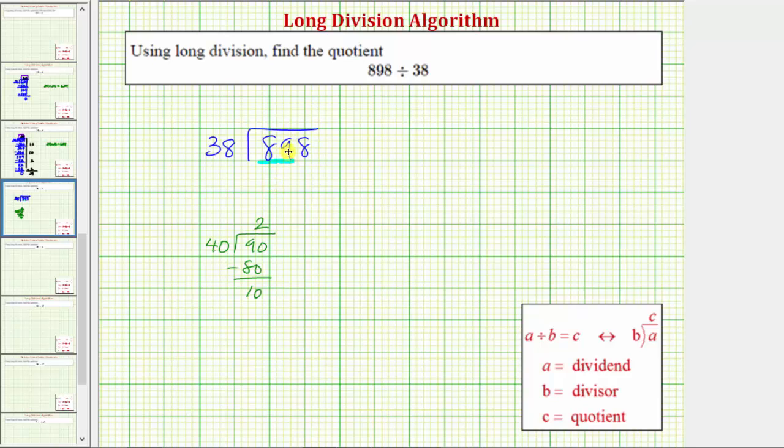So let's begin by placing a 2 in the quotient in the tens place value. And now we multiply by the divisor. So 2 times 8 is 16, so we place a 6 here, perform an exchange with the 1. 2 times 3 is 6, plus 1 is 7.